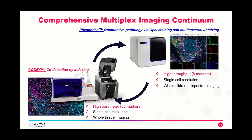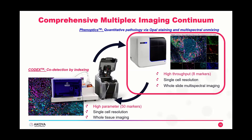At Akoya, we seek to overcome the limitations of ordinary immunofluorescence and immunohistochemistry methods and offer true multiplexing with true single-cell resolution. We see ourselves right in the center of a comprehensive multiplex imaging continuum — our Codex platform offers high multiplexing, and our Phenoptics platform allows high-throughput imaging and analysis of up to eight different markers per tissue. I would like to talk about our Phenoptics approach and how we can visualize eight markers in one single tissue section.